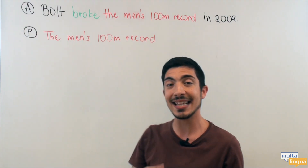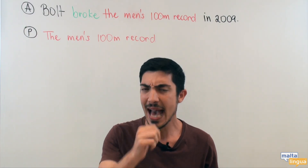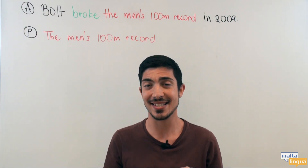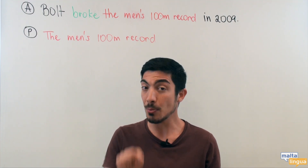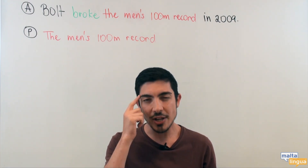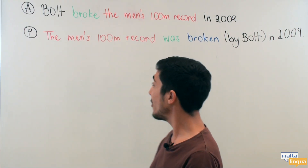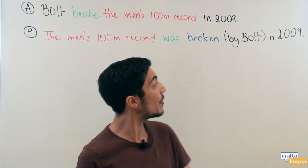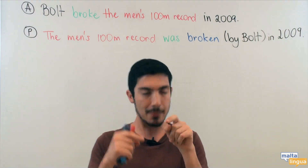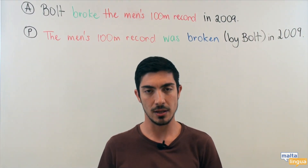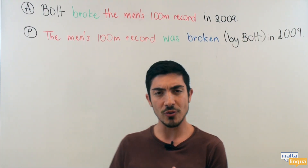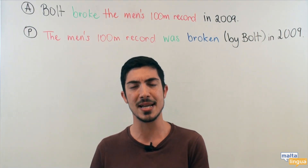This is how you would start it in the passive voice. Can you remember how we said this in the dialogue? You can pause the video and try to remember. The answer is: 'The men's 100 meter record was broken in 2009 by Usain Bolt.'